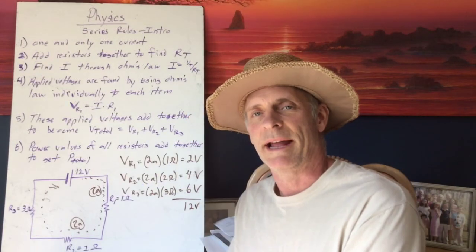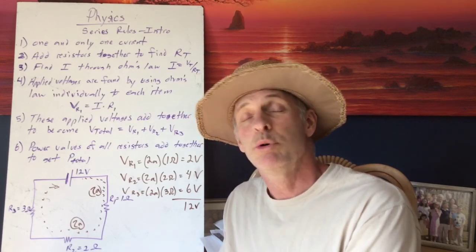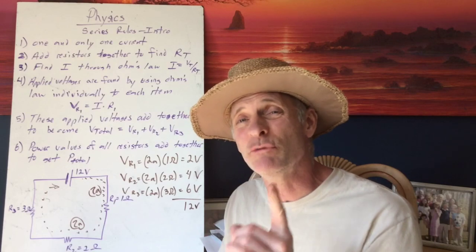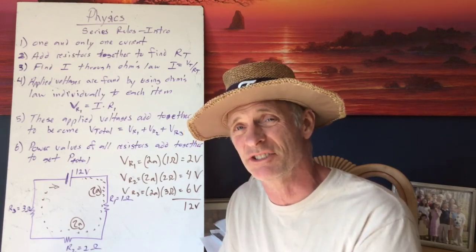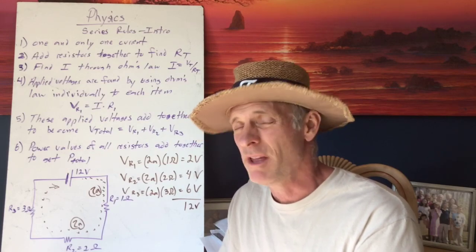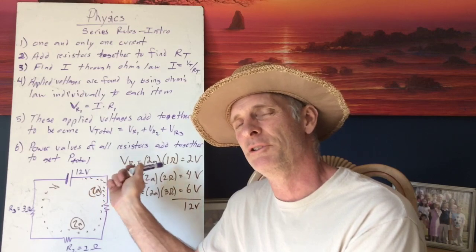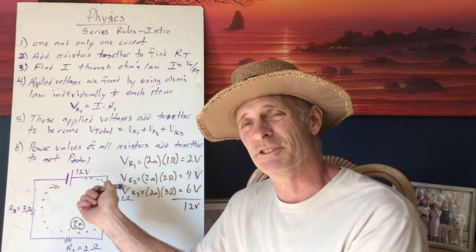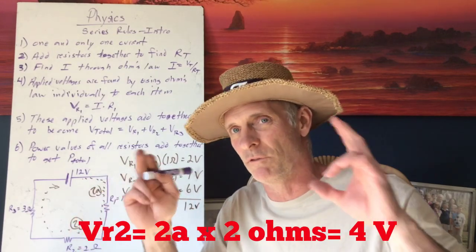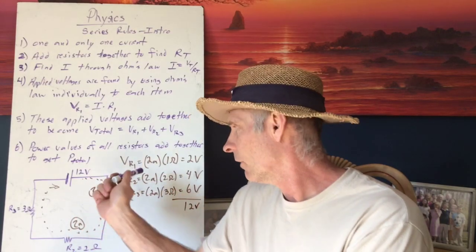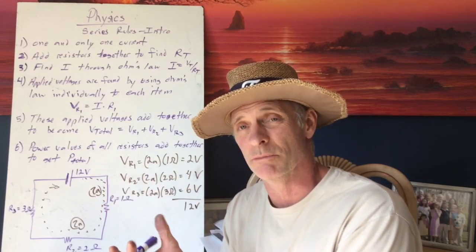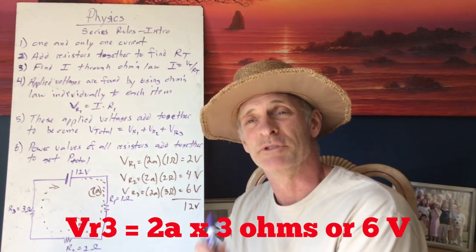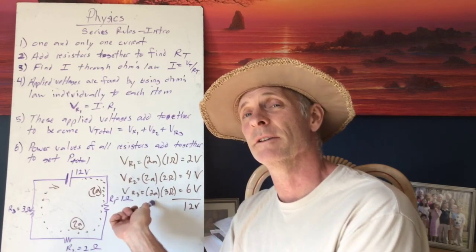The voltage drop for each resistor: V sub R1 = 2 amps × 1 ohm = 2 volts. V sub R2 = 2 amps × 2 ohms = 4 volts. V sub R3 = 2 amps × 3 ohms = 6 volts. The total voltage of 12 volts distributes unevenly across the resistors because the resistances are unequal.